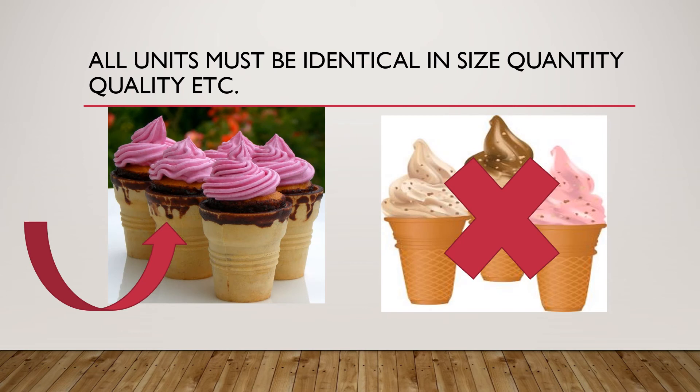The first assumption is that all units must be identical in size, quantity, and quality. You can see three different flavors of ice cream on the right — that won't do, because when conducting this experiment, all units of the commodity have to be identical in all respects. Only then can we say the law will be true.